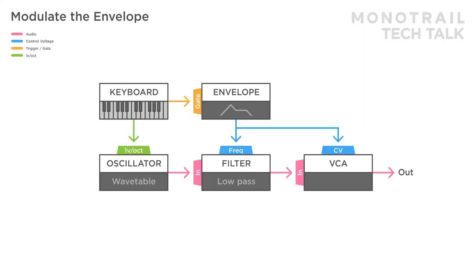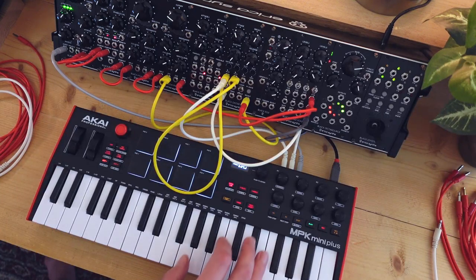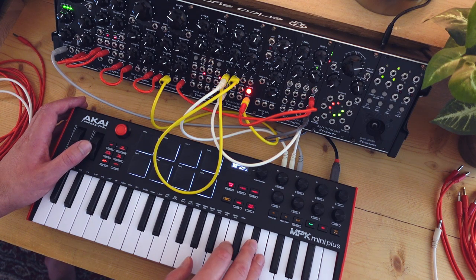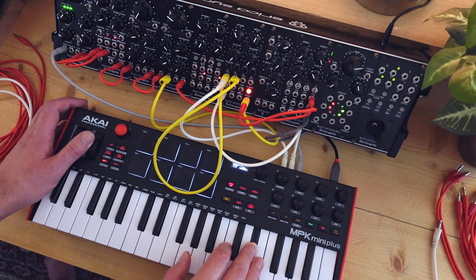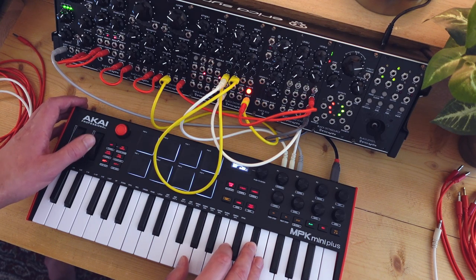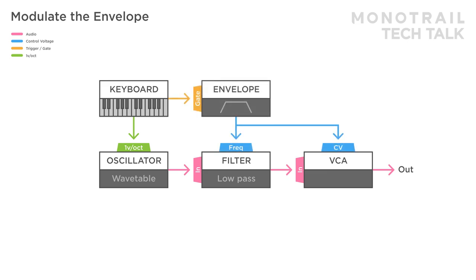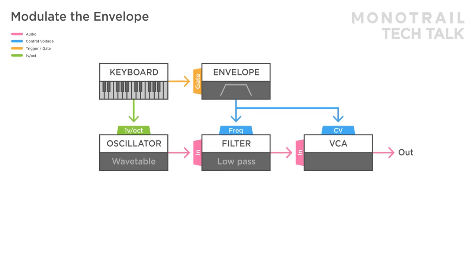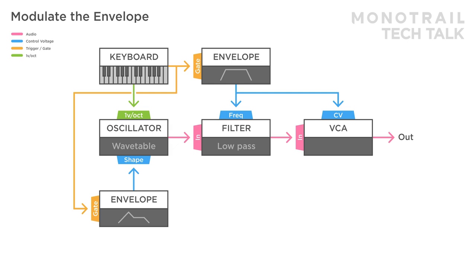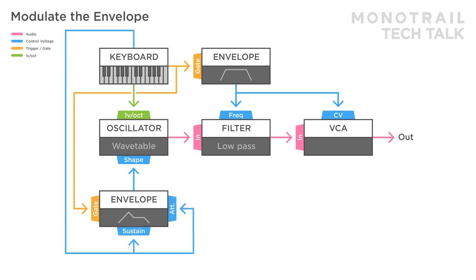Here's the same idea, but this time the mod wheel is used to modulate both the attack and decay times of the envelope, giving you easy control over the shape of the notes. You can experiment with different modulation destinations. Here's the bass voice, but this time a simple attack hold decay envelope is used to open the filter and VCA. A copy of the gate output from the keyboard is gating a full ADSR, and that envelope is modulating the wave shape of a wavetable oscillator. The mod wheel output is used to modulate the sustain and attack parameter of the ADSR, controlling tonal modulation within a note and allowing lots of variations.